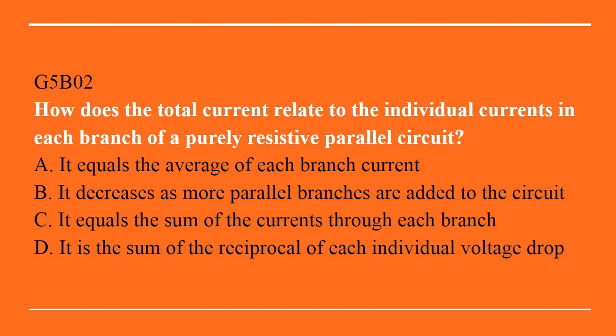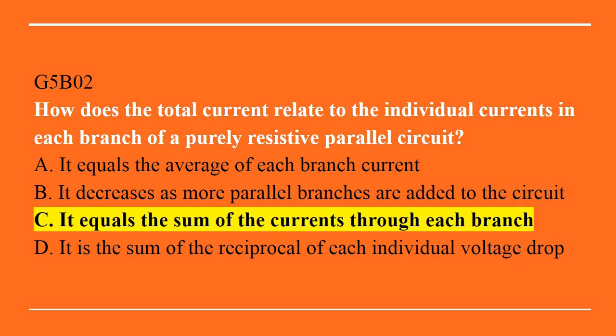G5B02: how does the total current relate to the individual currents in each branch of a purely resistive parallel circuit? A. It equals the average of each branch current. B. It decreases as more parallel branches are added to the circuit. C. It equals the sum of the currents through each branch. Or D. It is the sum of the reciprocal of each individual voltage drop. Answer is C: it equals the sum of the currents through each branch.